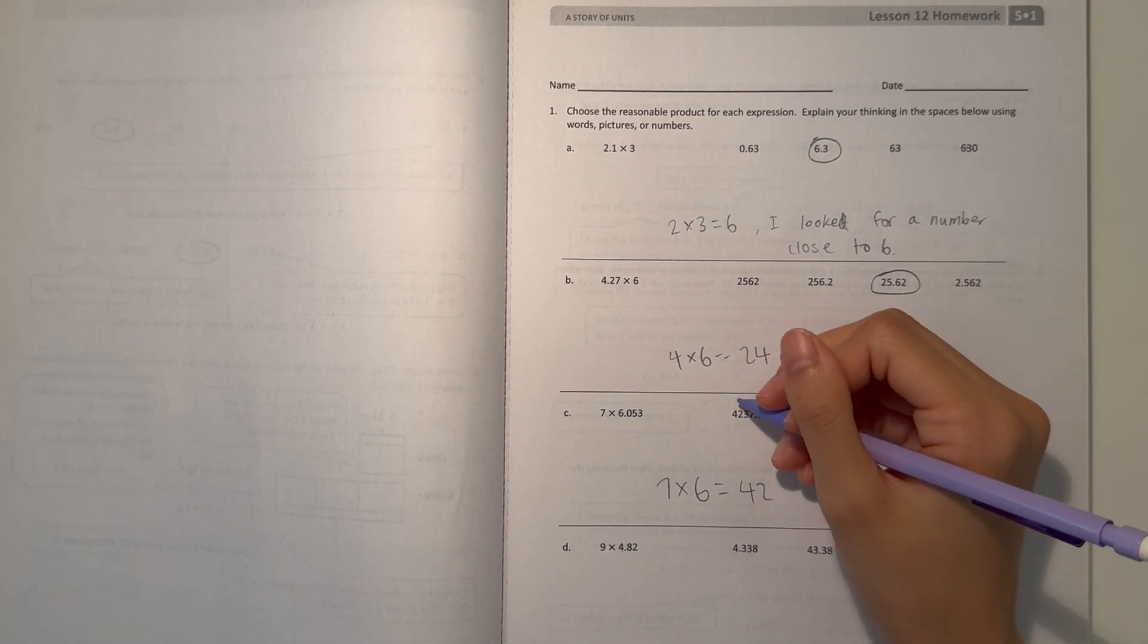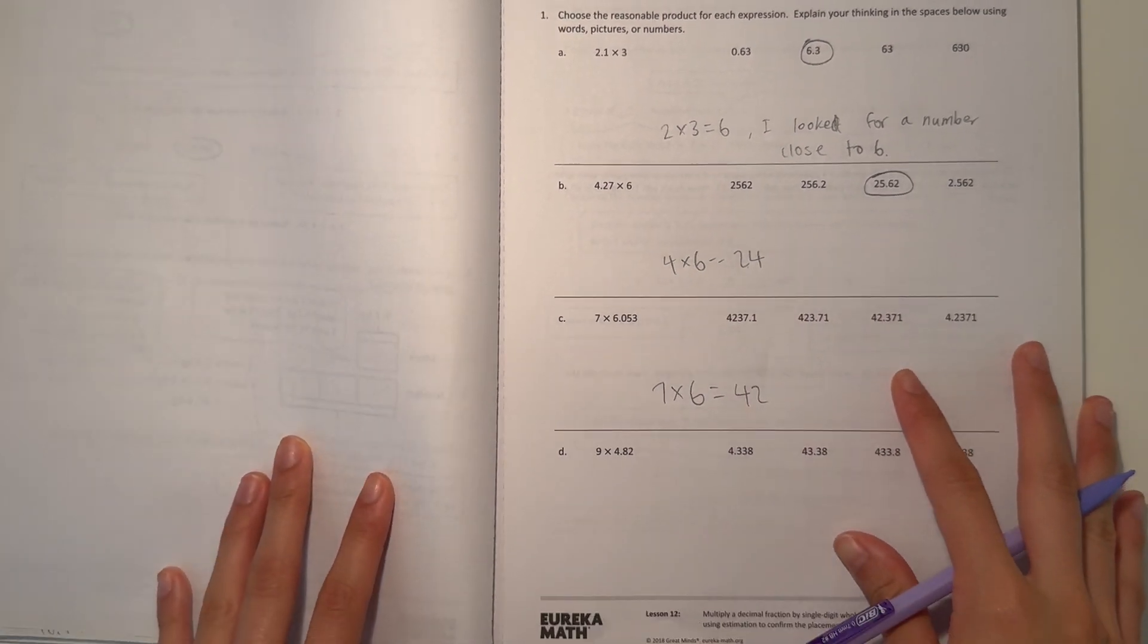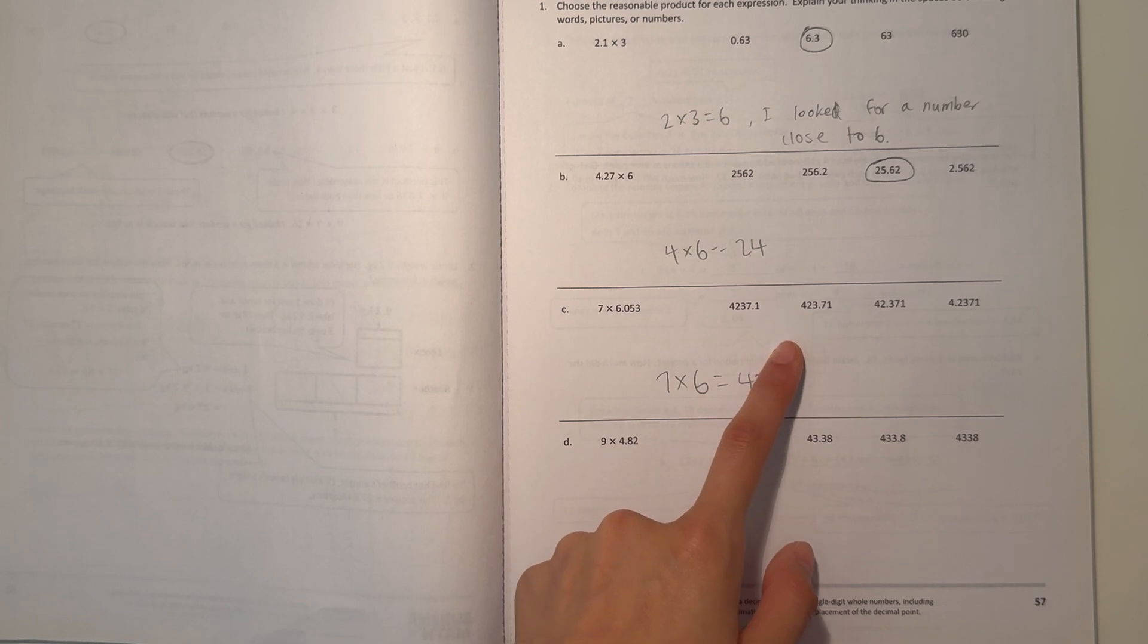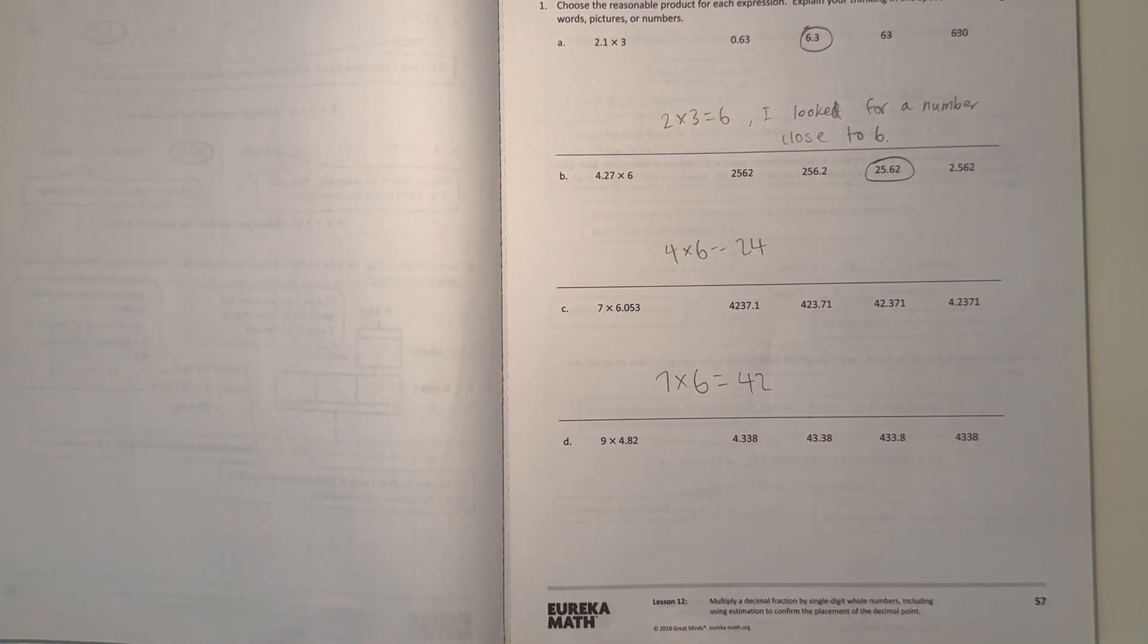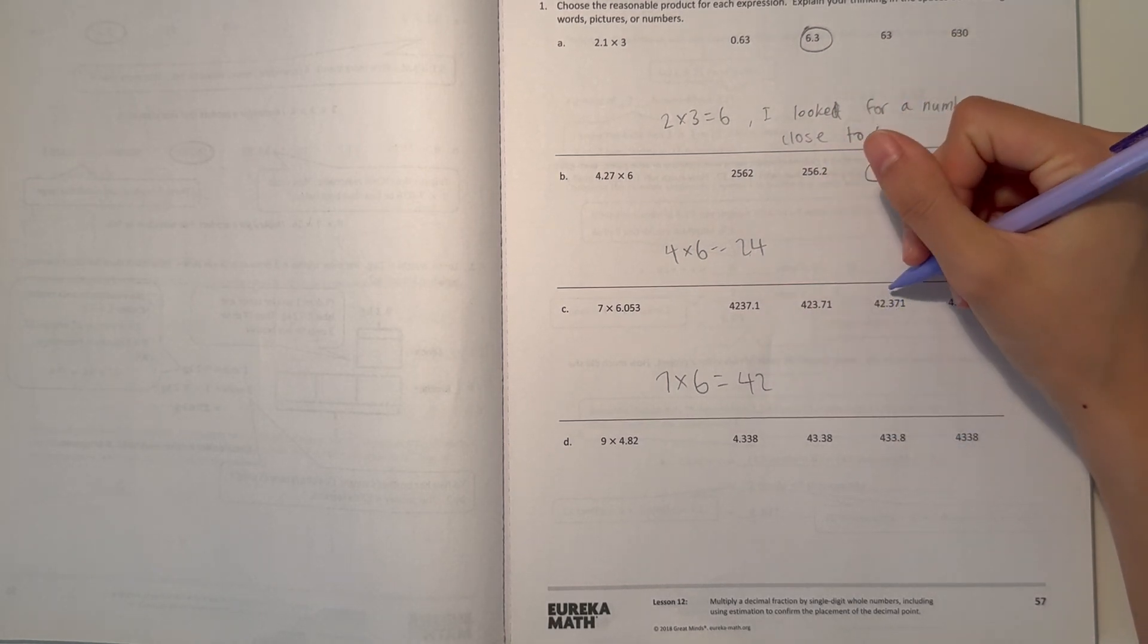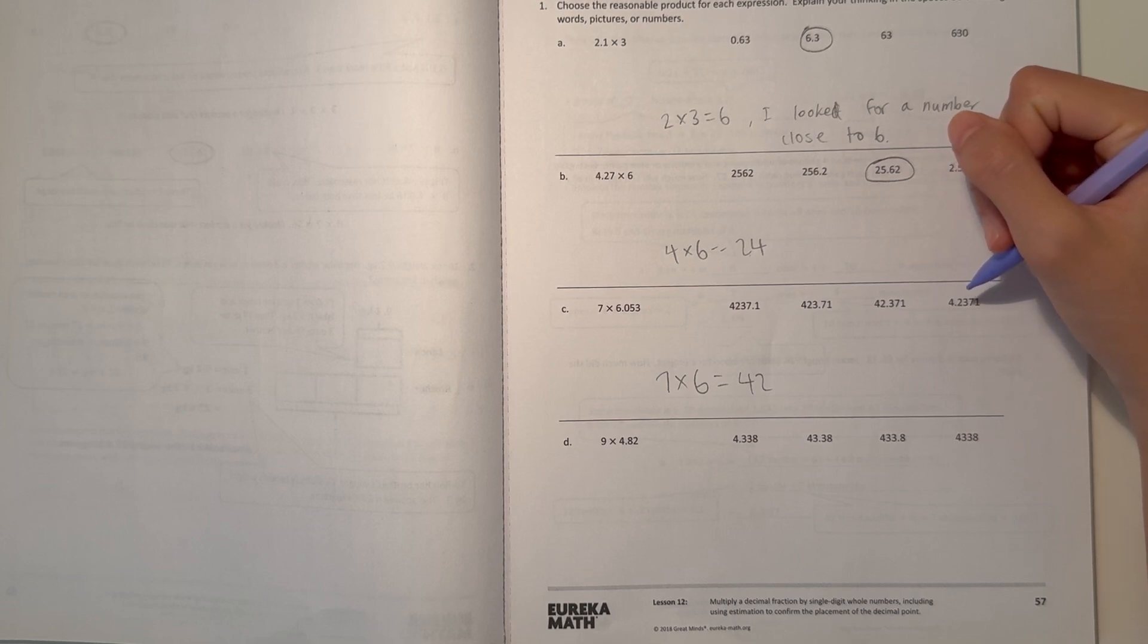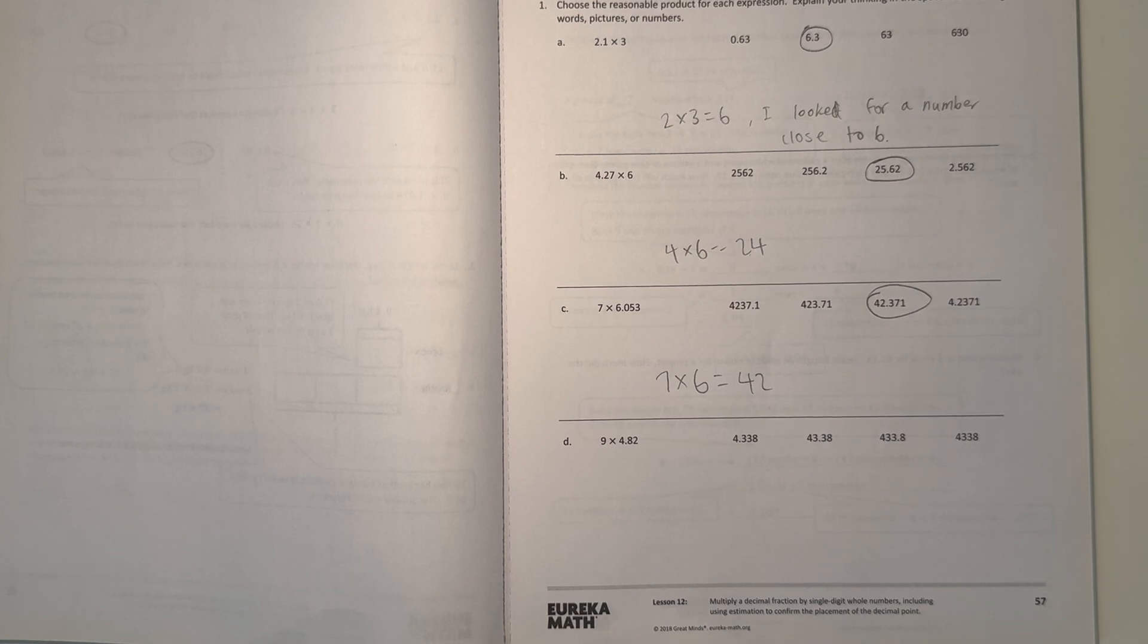Here we have 4,237.1. So that is not really close, so that would probably not be it. 423.71, I don't think so. And now I have 42.371, that's really close. So I think that might be it. Now we just have 4.237.1. So 42 is the answer.